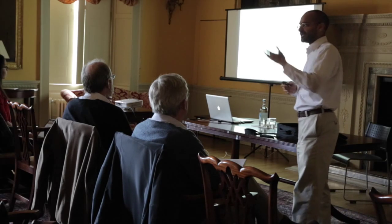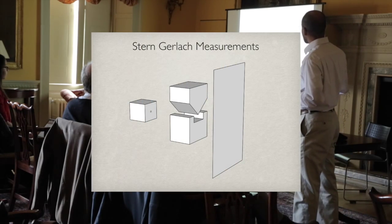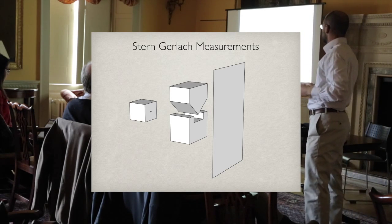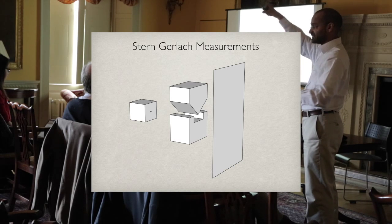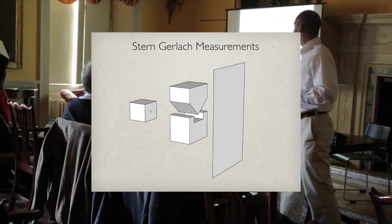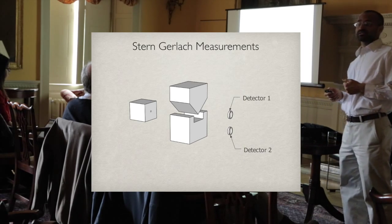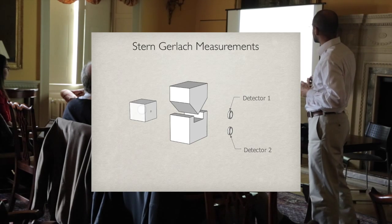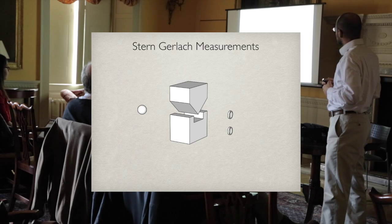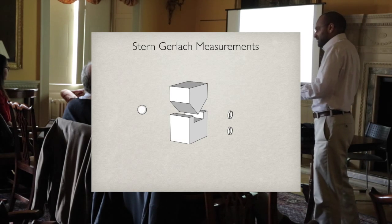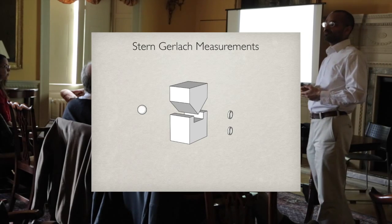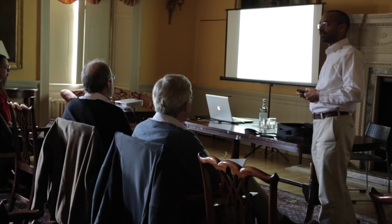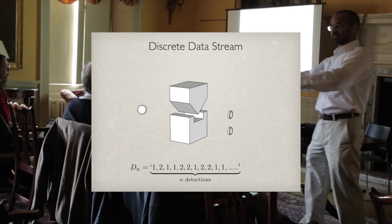What happens if we do this experiment on electrons? When we send silver atoms through this device, all outcomes cluster around just two locations on the screen. That's true even if we rotate the device, which is extraordinary from a classical point of view. We can throw away the screen entirely and just put a couple of detectors there. Quantum theory says there really are just two possible outcomes. In each trial, we get a one or a two, a discrete data stream. This discretization is fundamental.